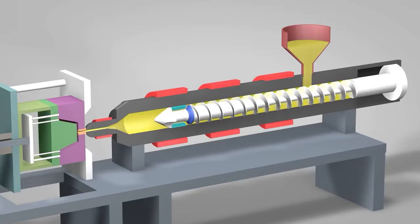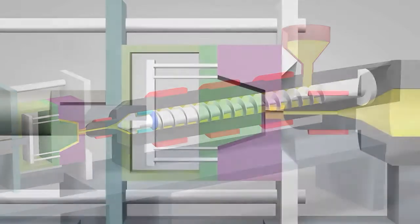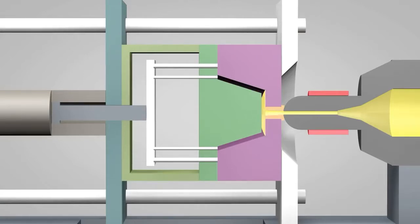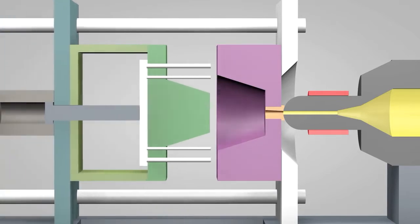Once enough molten plastic is in front of the screw, it ramps forward like the plunger of a syringe. In a matter of seconds, the screw injects the molten plastic into the empty part of the mold called the cavity image. The plastic solidifies in under a minute. The mold opens and the part is ejected. The mold then closes and the process repeats.